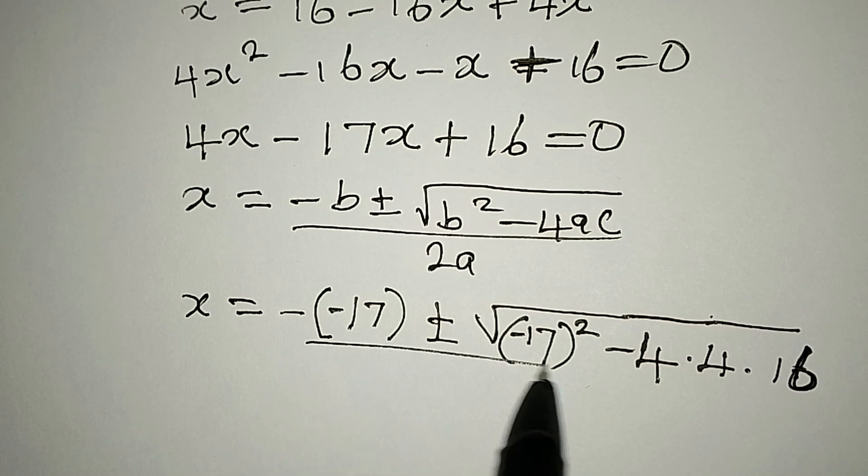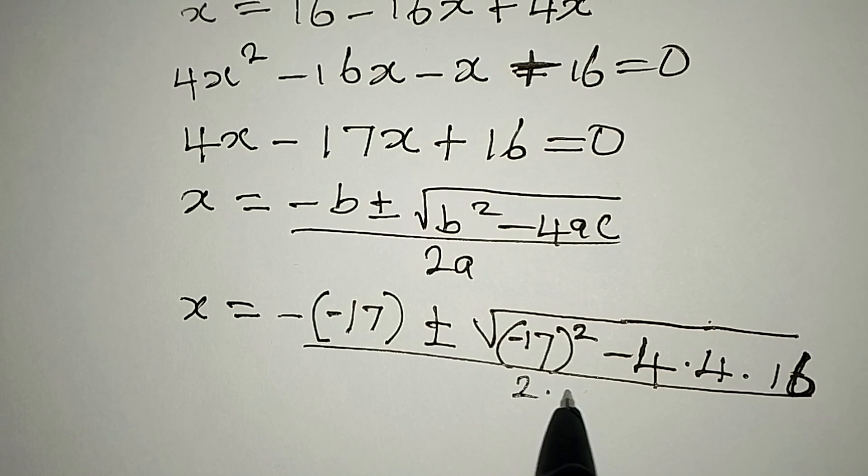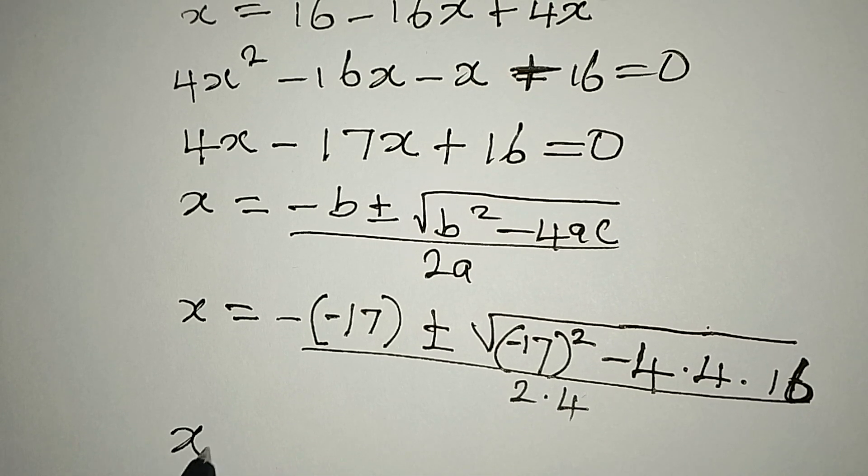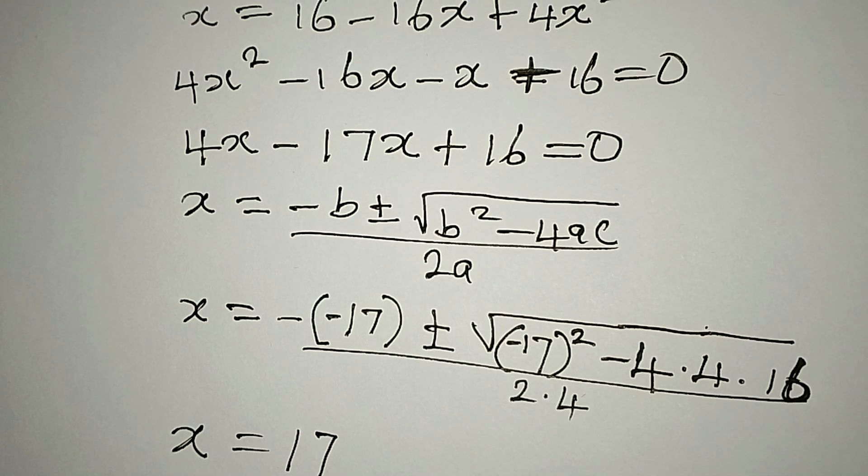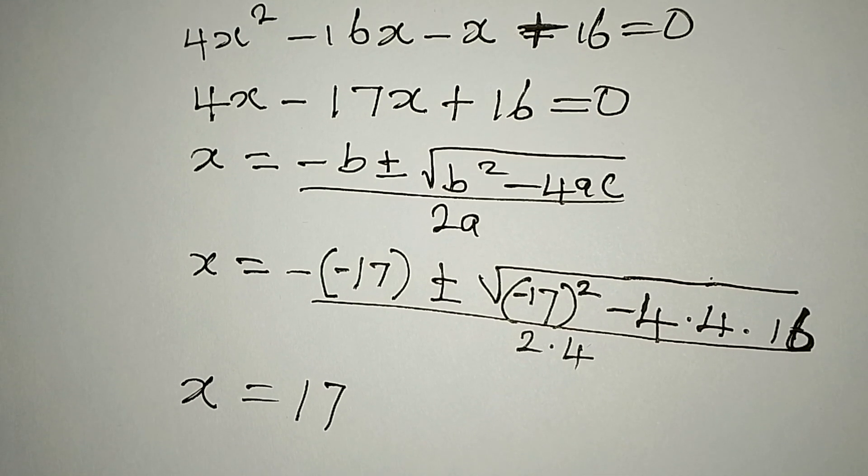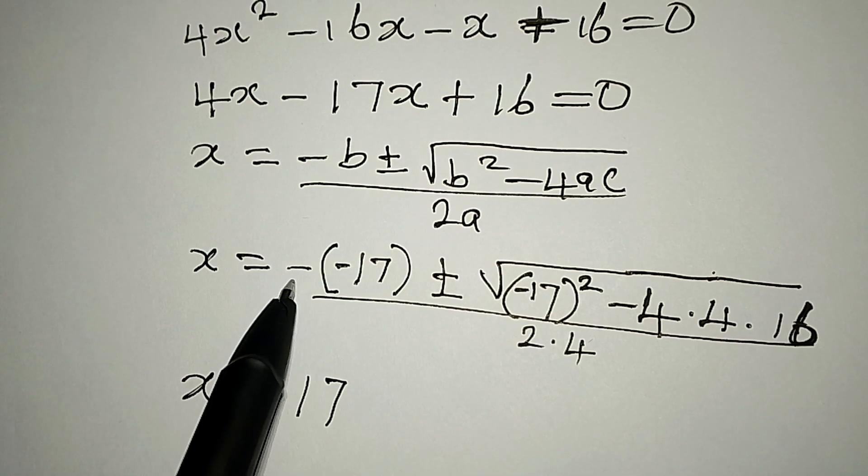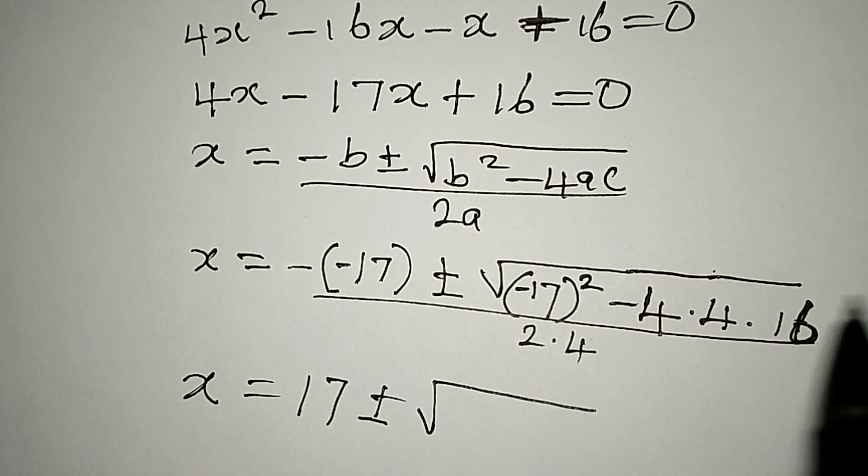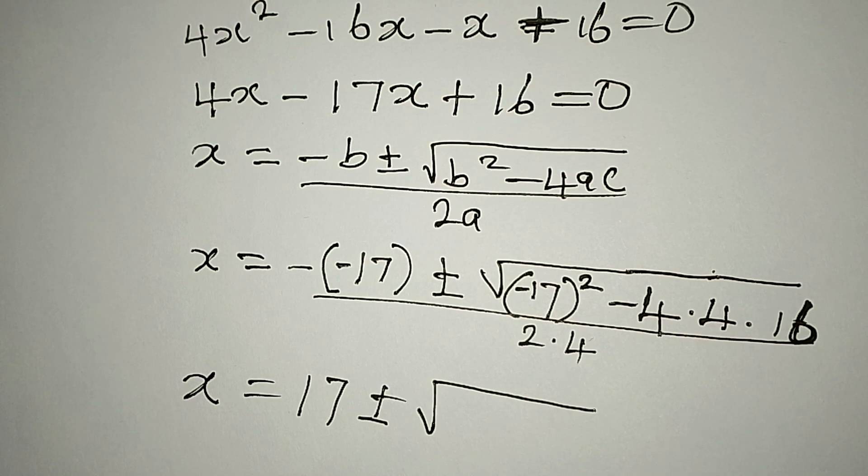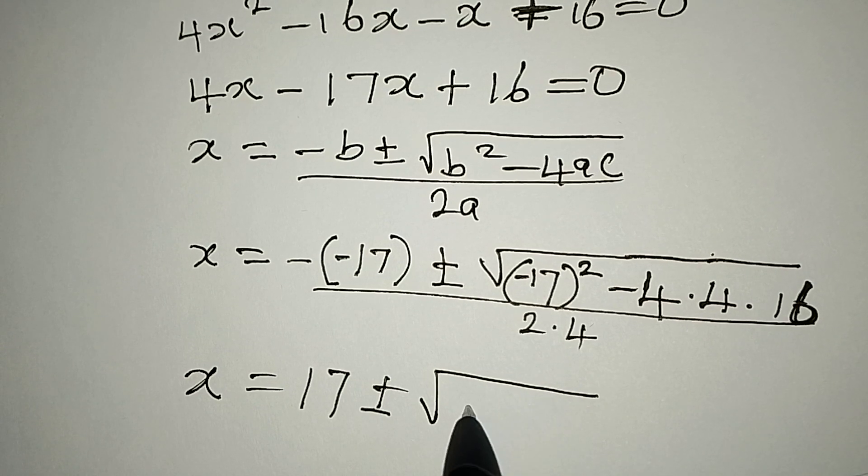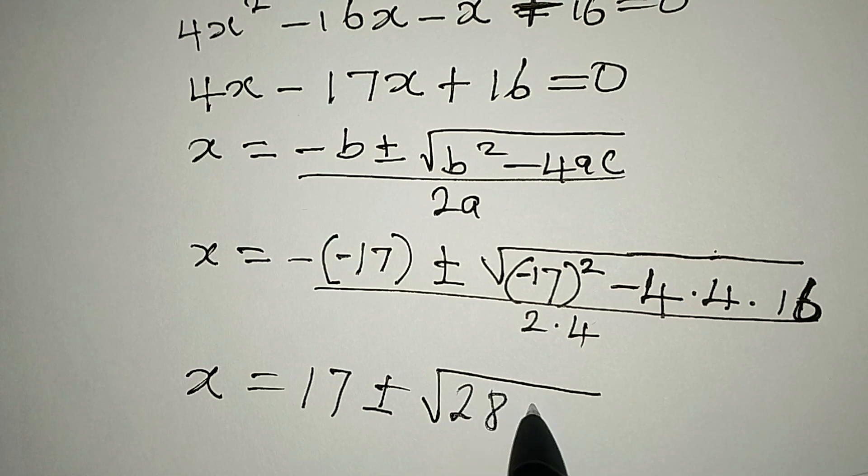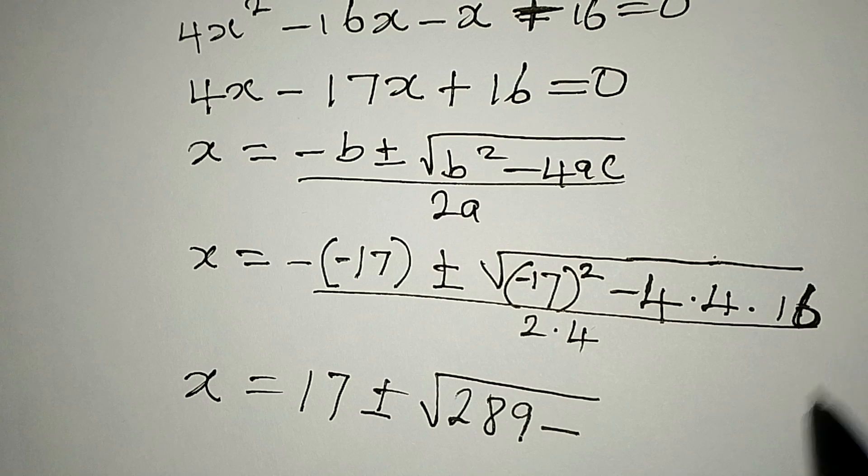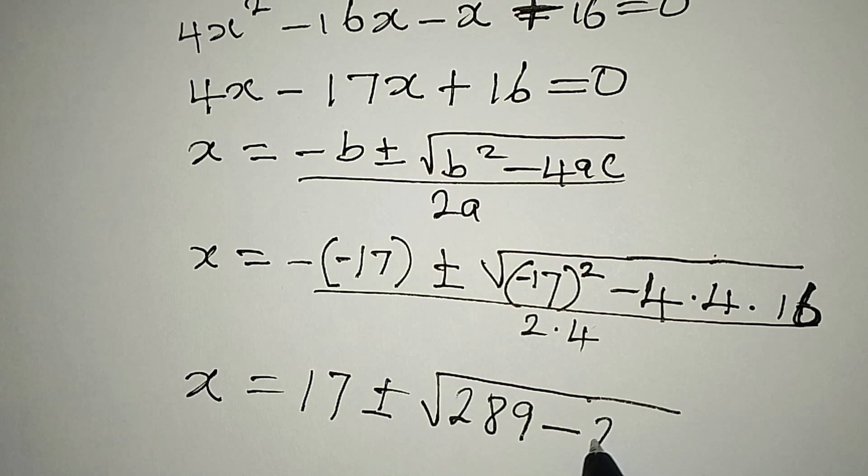So the whole of this will be over 2 times 4 because a is 4. Now this means we have x equal to 17, because we have negative negative 17, that's plus 17, plus or minus. We have negative 17 squared that will give us positive 289, then minus 4 times 4 is 16, times 16 is 256.